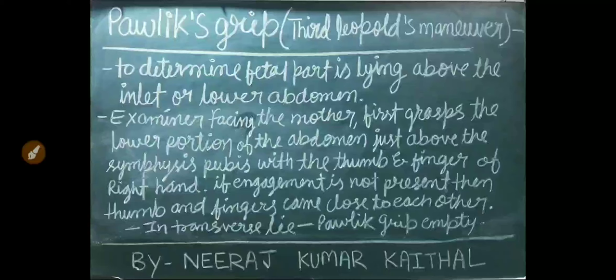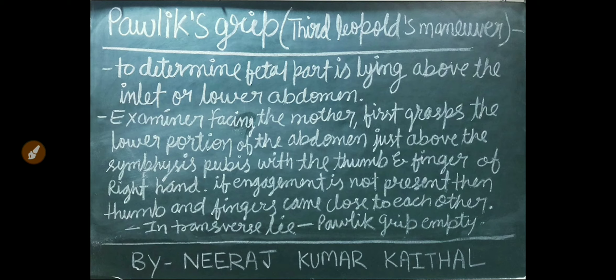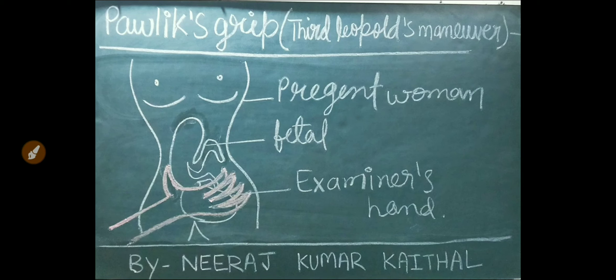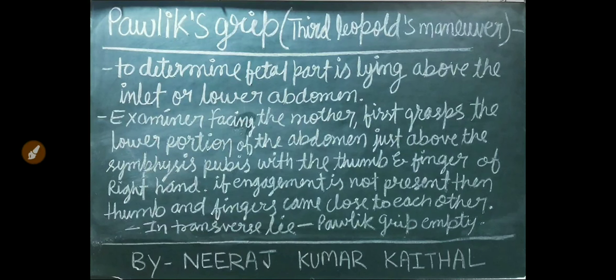Now let's talk about the third Leopold's manoeuvre, also called Pawlik's grip. It is used to determine whether the fetal part is lying above the inlet or lower in the abdomen. The examiner, facing the mother, first grabs the lower portion of the abdomen just above the symphysis pubis with the thumb and fingers of the right hand. In the diagram, the pregnant woman is lying and the examiner is facing her, palpating just above the symphysis pubis with his right hand. If engagement is not present, the thumb and fingers come close to each other. In transverse lie, the Pawlik's grip is empty.